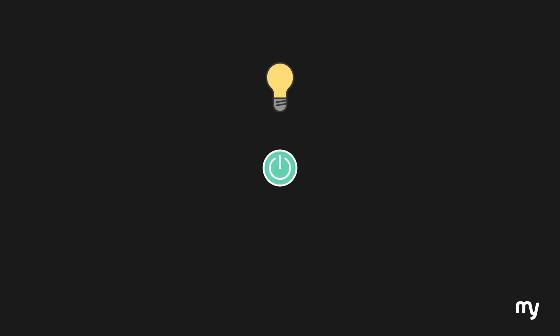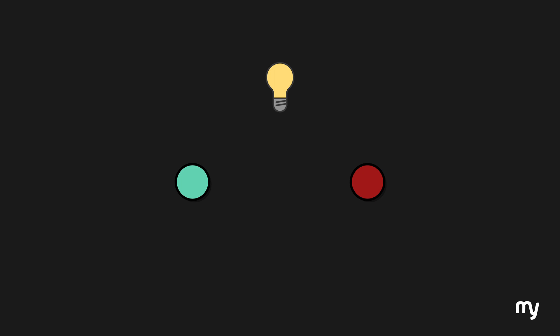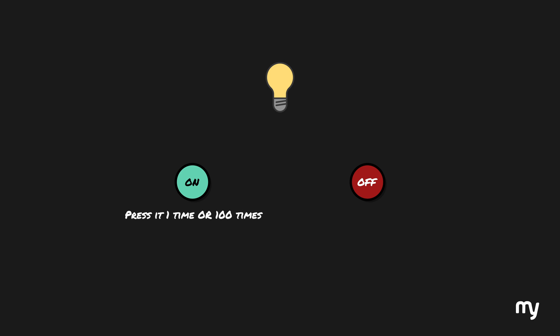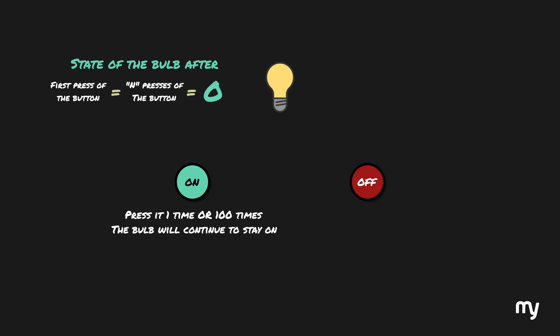Imagine a bulb with a switch. You flip the switch, it is switched on. You flip it again, it is switched off. Every time you flip the switch the state of the bulb changes. But what if there were two buttons instead — one to switch the bulb on and another to switch it off. If the bulb was off initially and you press the on button, the bulb will switch on. If you press on again, nothing will happen. It doesn't matter if you press it one time or a hundred times, it will continue to stay on. The state of the bulb after the first press and after pressing n times is exactly the same — that is, the on state.